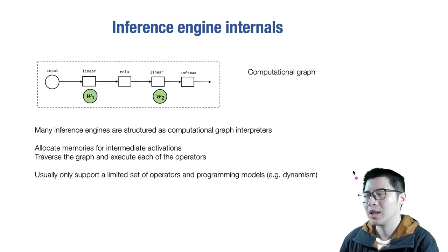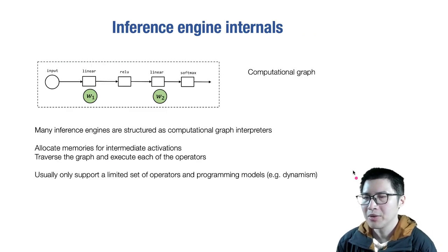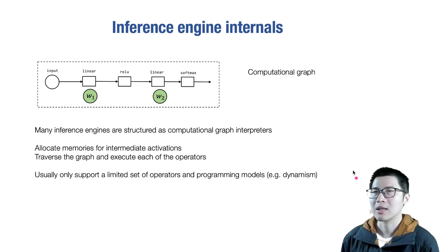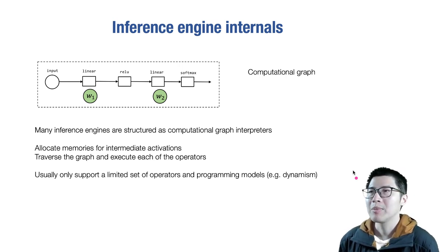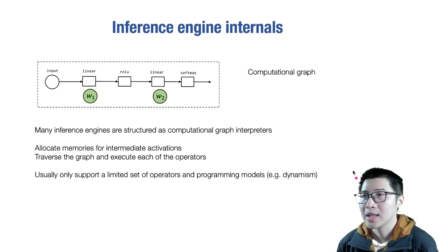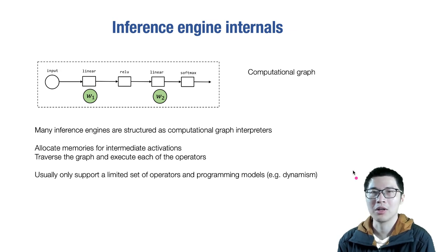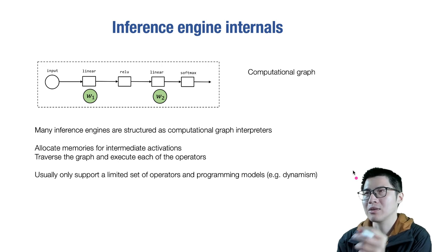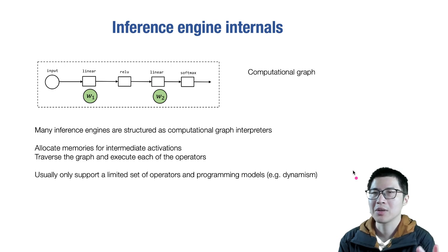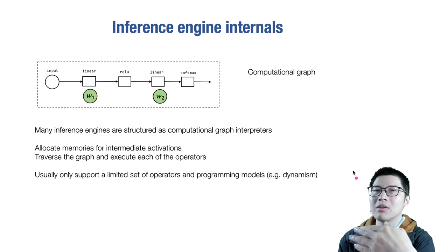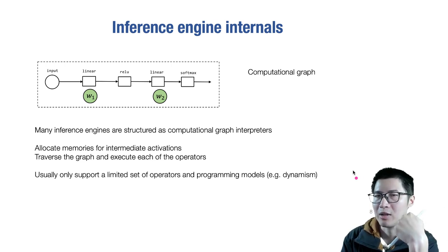Inside inference engines like TensorRT or TFLite, most are structured as a computational interpreter. They allocate intermediate memories for the computational graph, walk through it in topological order — running computation on the first layer, getting the result, then running the second layer, and so on. After interpreting each step end-to-end, it gives you the final output as your prediction.